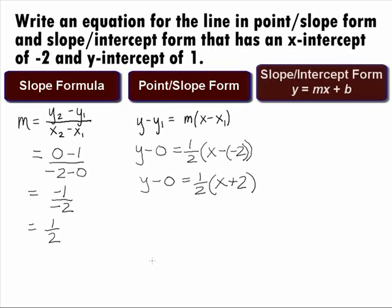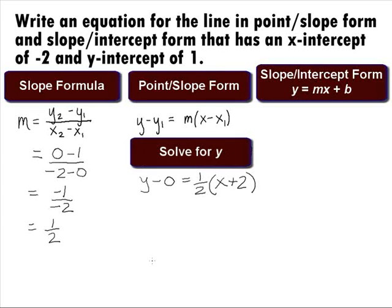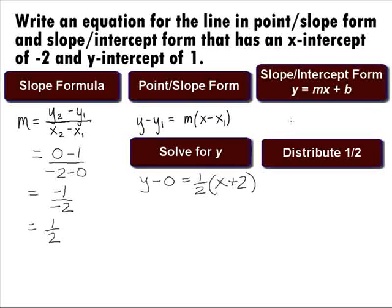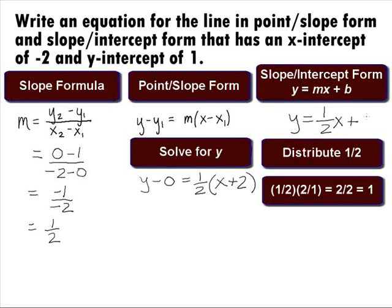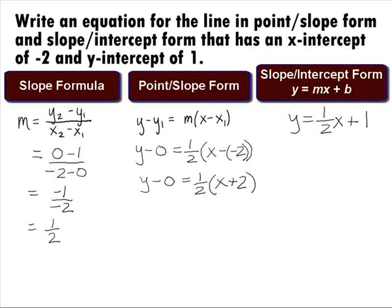Next, we want to write an equation in slope-intercept form, which is y equals mx plus b. This means we want to solve this equation for y. Distributing the 1 half through the parentheses, we get y equals 1 half x plus 1, since 1 half times 2 gives us 1. Our final answer for the line that has an x-intercept of negative 2 and a y-intercept of 1 in point-slope form is y minus 0 equals 1 half times the quantity x plus 2, and in slope-intercept form, it is y equals 1 half x plus 1.